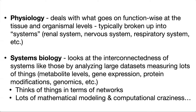If we take things a level up from the cell, we're dealing with physiology. This addresses what goes on function-wise at the tissue and organismal levels. If you take a physiology course, it's typically broken up into systems — the renal system, the nervous system, the respiratory system, etc. You might be taking physiology as part of an anatomy and physiology (A&P) course, where you'd learn about the anatomical structures involved as well as the processes that anatomy participates in.